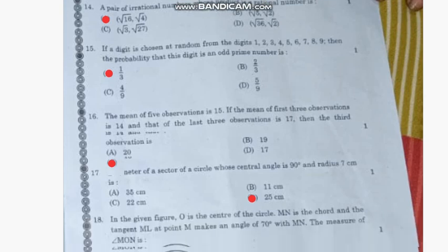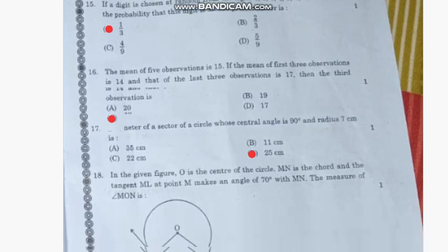Question number 15: If a digit is chosen at random from the digits 1, 2, 3, 4, 5, 6, 7, 8, 9, then the probability that the digit is an odd prime number is—the correct answer is option A, 1/3.